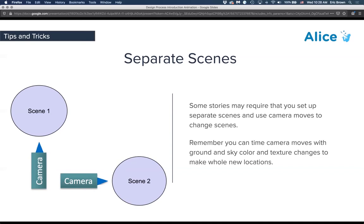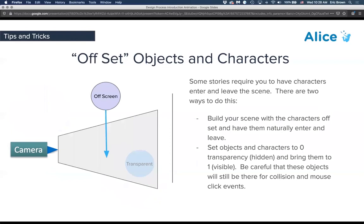You can set up one scene in one part of your Alice world, another scene at a completely different location in another part, and jump the cameras between them. When doing set design, remember it's very much like a theater set — we see what's in front of the camera. We need to have things enter the camera scene, appear, and disappear. Because of how Alice works, you'll need to have those objects already in the world to be able to program them.